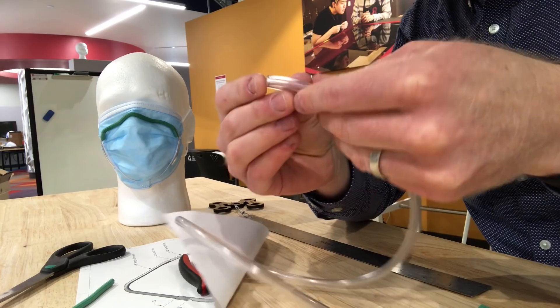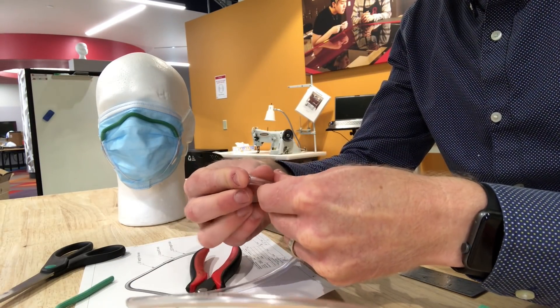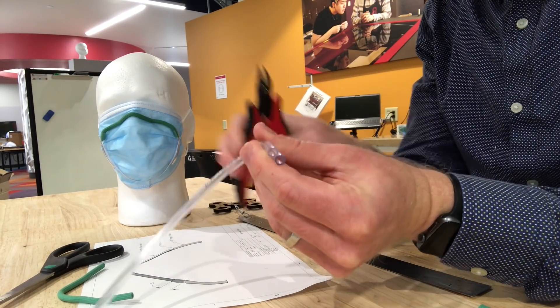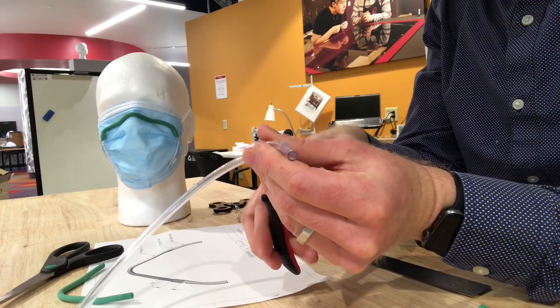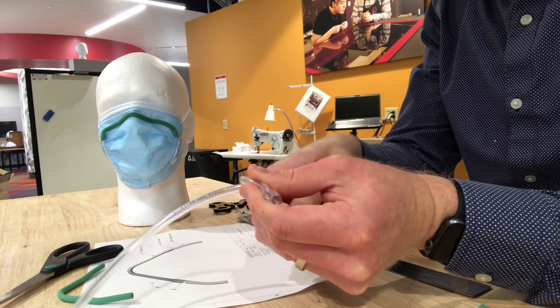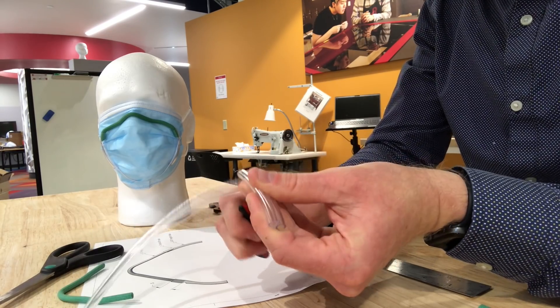So once you have one, then you can use the first one to measure the length of the second one. So put those together and cut those to length.